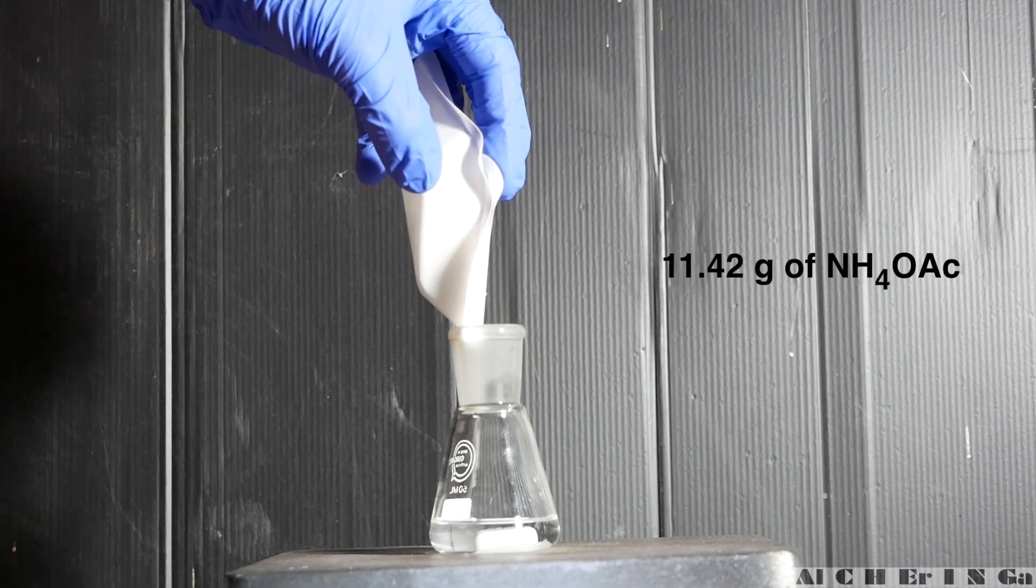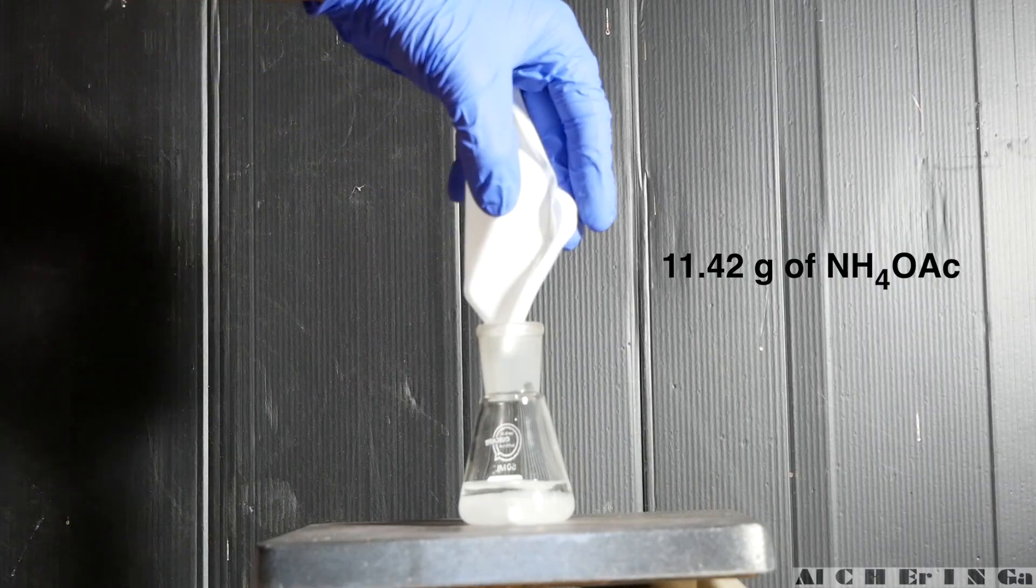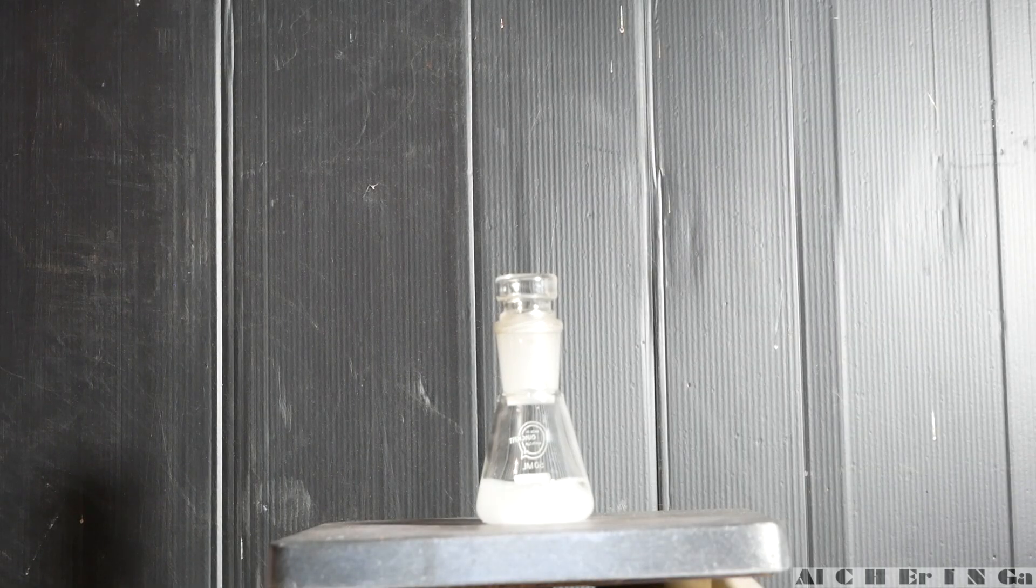Then, add in 11.42 grams of ammonium acetate, stopper the flask and start stirring for a few minutes.